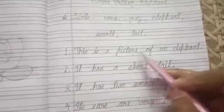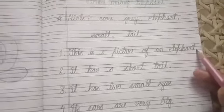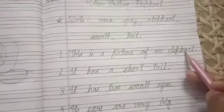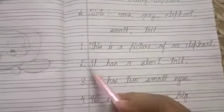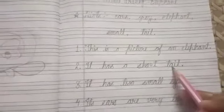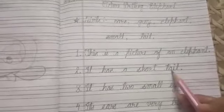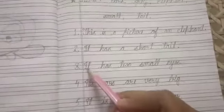In the second line, it has a short tail, full stop. Tail is already given in the hint box. Number three, it has two small eyes, full stop, and small is already given in the hint box.